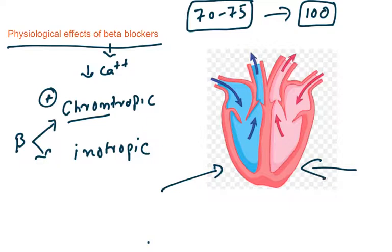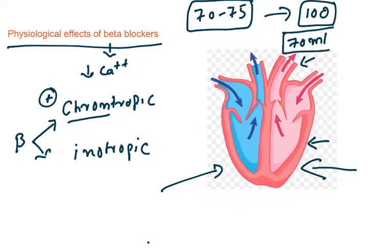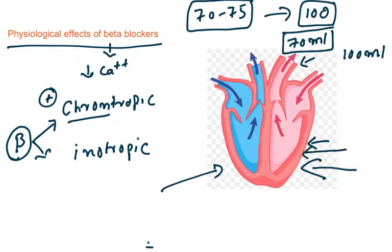Inotropy means an increase in force of contraction. Normally when the left ventricle contracts, 70 ml of blood comes out with each contraction — this is the stroke volume. When noradrenaline acts on beta receptors, the force of contraction increases so the volume which comes out becomes 100 ml per stroke. This property is called positive inotropic effect.